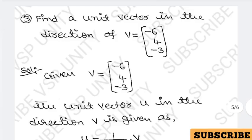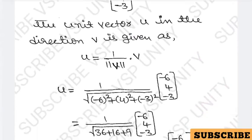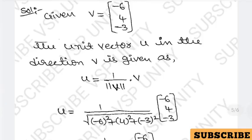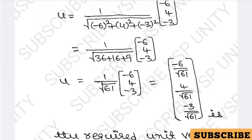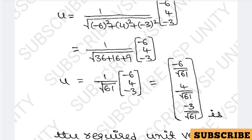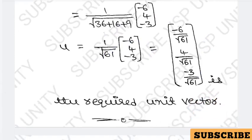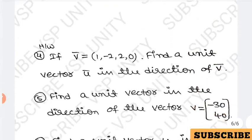Next: find a unit vector in the direction of v equals (-6, 4, -3). Let u be the unit vector, so u equals v divided by norm(v). Norm(v) equals the square root of (-6)² + 4² + (-3)² equals the square root of 36 plus 16 plus 9 equals the square root of 61. So the unit vector is (-6/√61, 4/√61, -3/√61).